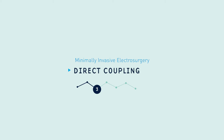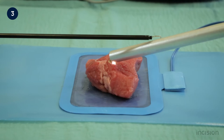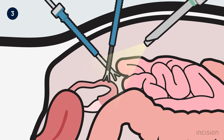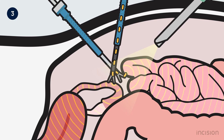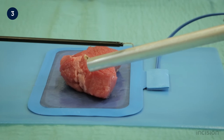Aside from the electrode tip accidentally touching unintended tissues, there is also a risk of the electrode tip touching or being near to other conductive instruments. Upon activation, this can cause alternative conductive pathways to form via unintended tissues, which have a large chance of being negatively affected by the passing current. This is known as direct coupling and can result in the burning or perforation of structures.